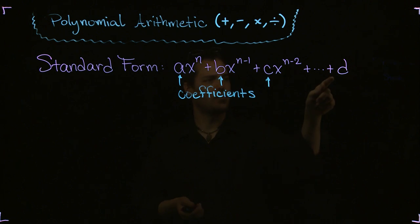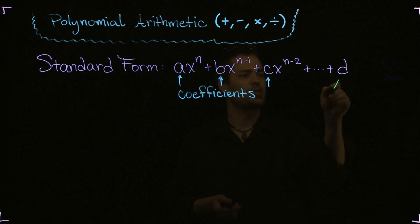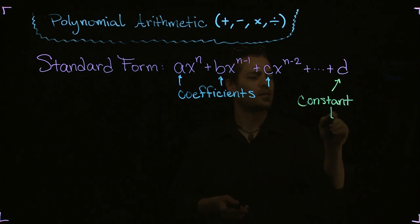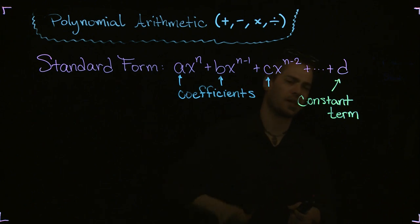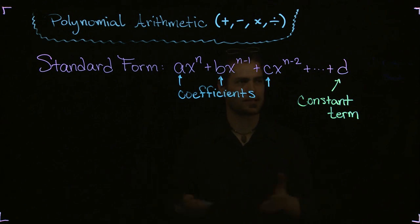This last guy over here without an x, we call that the constant term. That makes sense because if we were to evaluate a given polynomial for a certain value of x, we would stick in numbers everywhere we see an x, and each term would change value—but not this one. That would never change value because there's no x attached to it, so we call it constant.